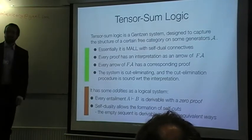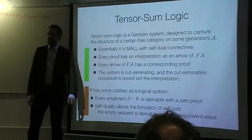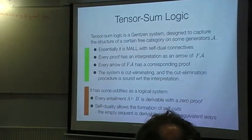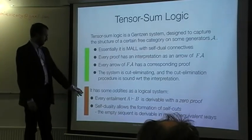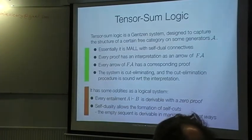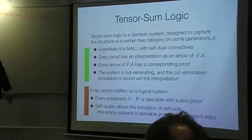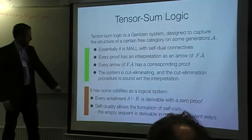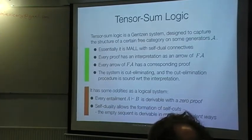However, it's not very typical for a logic. So, for every formula A and B, A implies B is a provable sequent, with infinitely many proofs. And because you have so much duality in this logic, you can do self-cuts. And therefore, the empty sequent is not just provable, but provable in perhaps many inequivalent ways. However, there's no avoiding this, because this is what the structure of the category is. But these, as I'm sure everyone knows already, these empty sequents correspond to the scalars in the compact category.